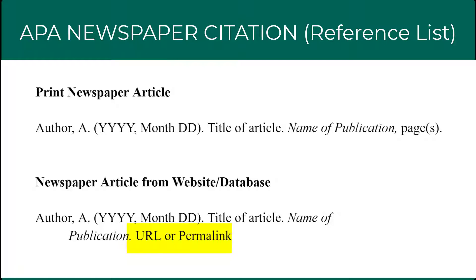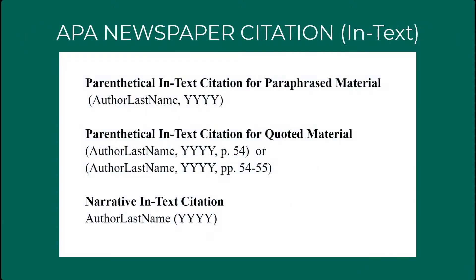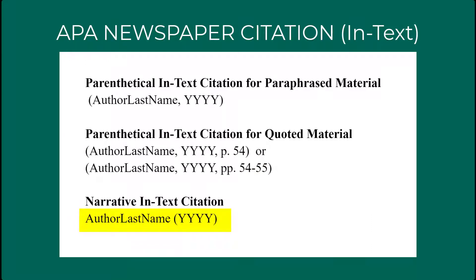If the article is from a print source, follow the name of the publication with a comma and the page number of the article. If the article is an electronic publication or retrieved from a database, follow the name of the publication with a period and include the URL or permalink to the article. If paraphrasing in a paper, include the author's last name followed by a comma followed by the year of publication in parentheses after the paraphrased material. If including a direct quote, also include the page number from which you are quoting. If you introduce the author as part of the text, follow this with the year of publication in parentheses.